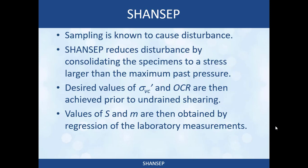The theory behind SHANSEP is that obtaining a sample is known to cause disturbance to the soil. Whether you're pushing a Shelby tube or using the best possible piston sampler, you're going to get some disturbance. You can reduce that disturbance by consolidating the sample in the laboratory device. For example, in triaxial testing you put the specimen in a membrane, place it in the device, then consolidate it to a pressure higher than the maximum past pressure the soil has ever experienced. So you need to do a consolidation test before your strength testing.